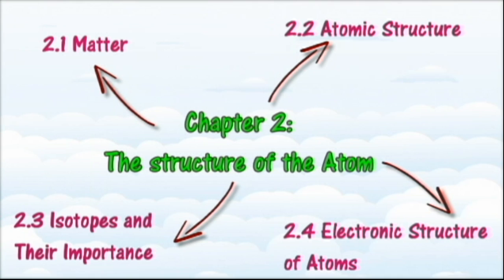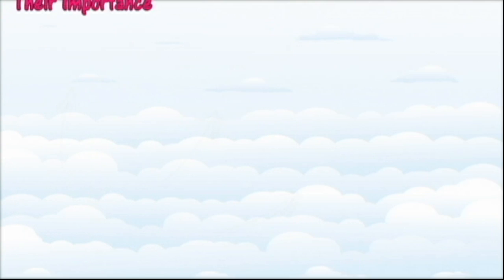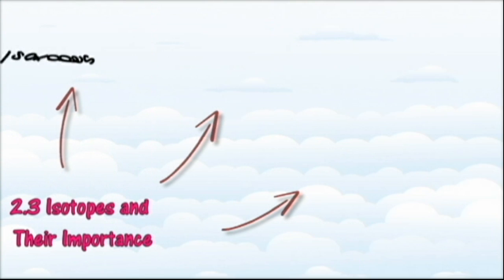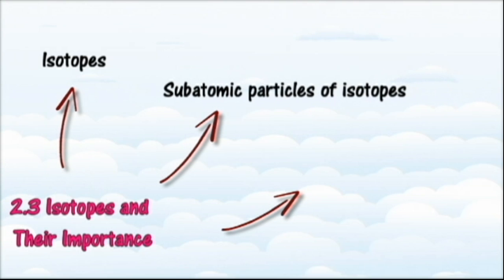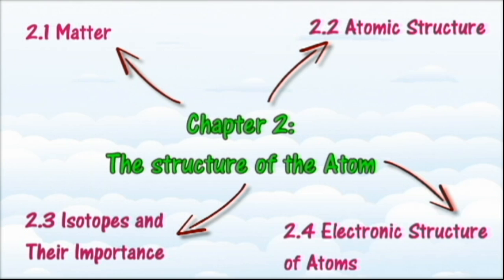In section 2.3 we will learn about isotopes and assess their importance. At the end of this section you should be able to: state the meaning of isotopes, list examples of elements with isotopes, determine the number of subatomic particles of isotopes, and justify the uses of isotopes in daily life.